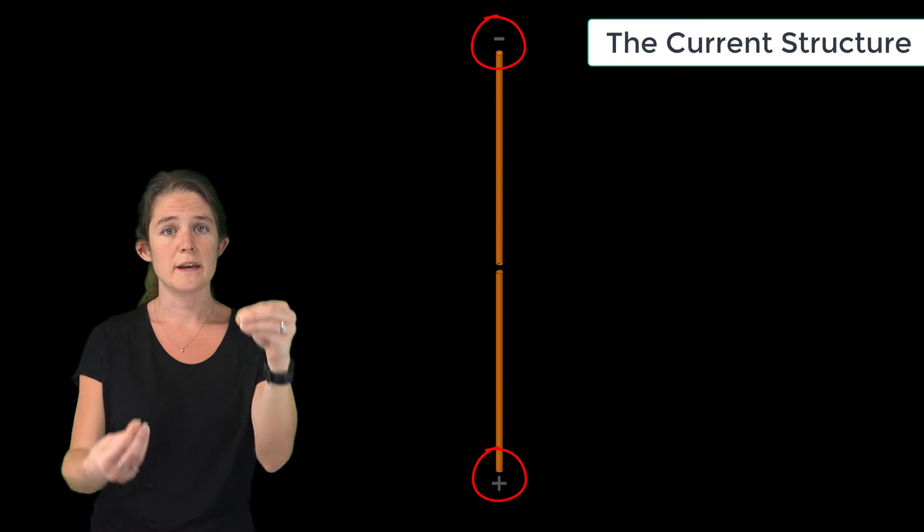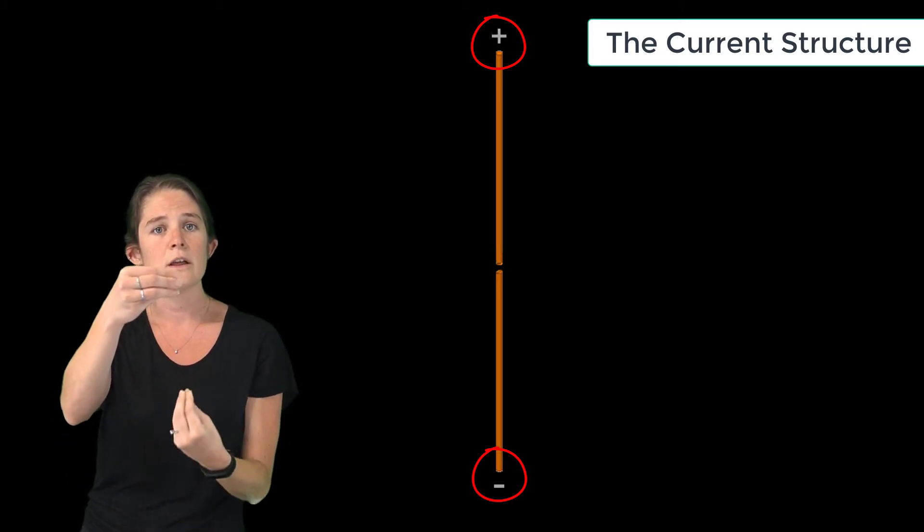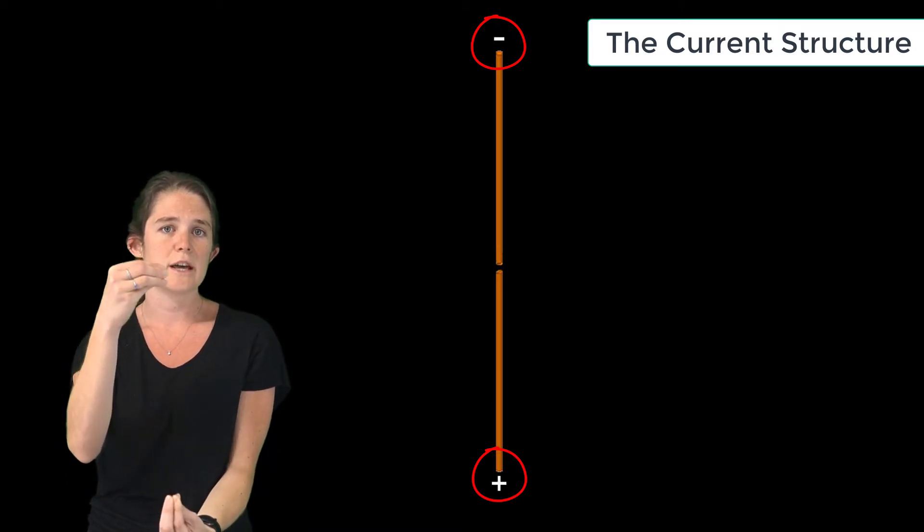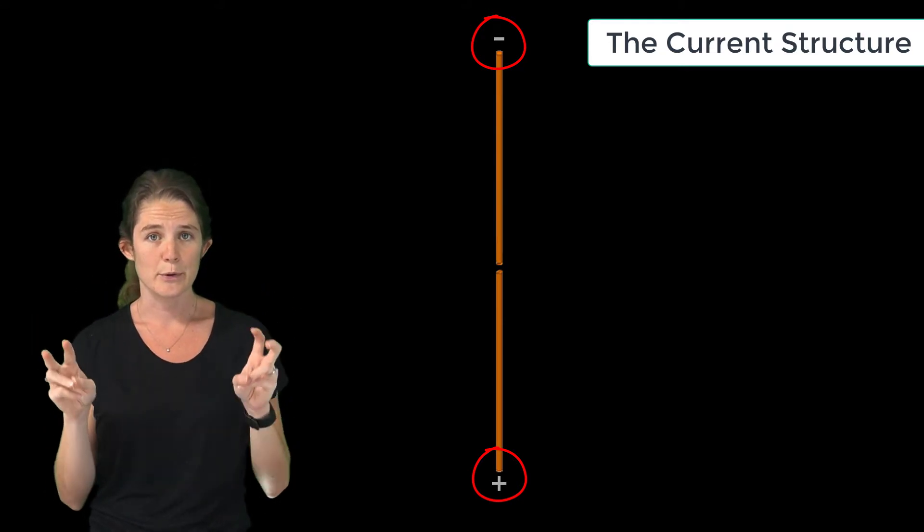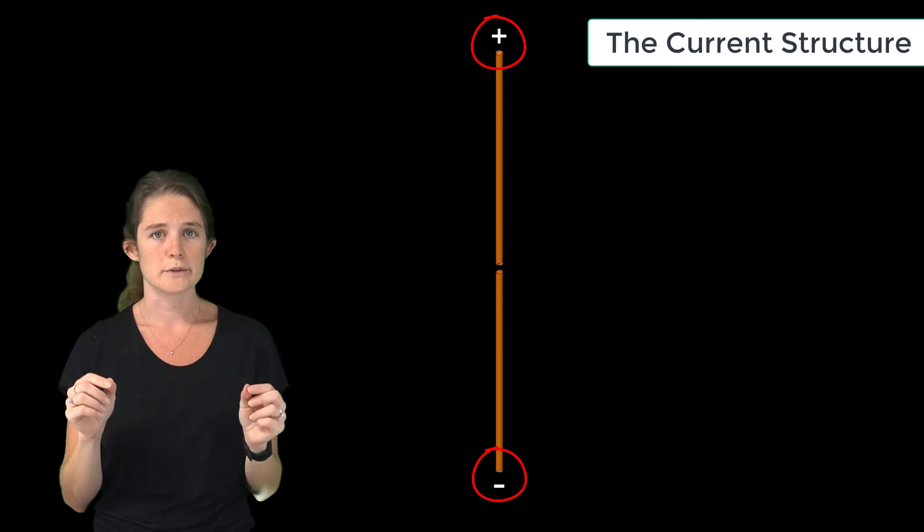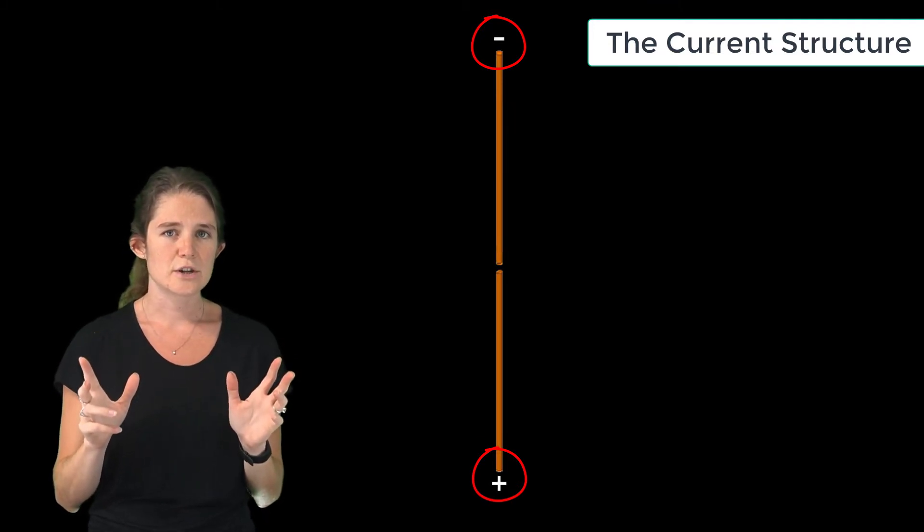When the upper end is positively charged, the bottom end is negatively charged, and then 180 degrees later in the cycle, the bottom end is positively charged and the upper end is negatively charged. This is where this antenna gets the name dipole, meaning two poles. It's from the two electrical charge concentrations existing at either end of the conductor.